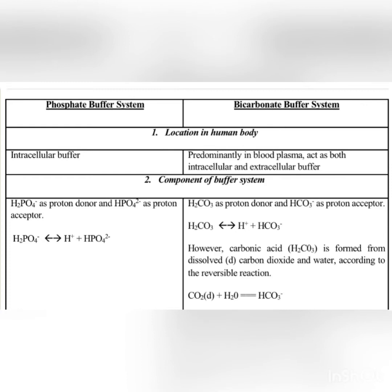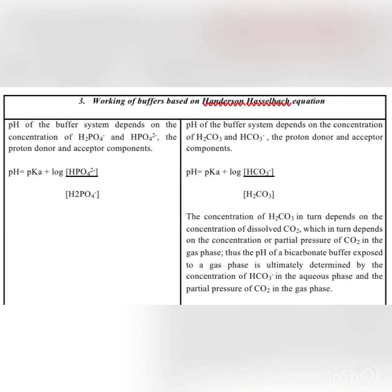The components of the phosphate buffer system are dihydrogen phosphate, which acts as a proton donor, and hydrogen phosphate, which acts as a proton acceptor. On the other hand, for the bicarbonate buffer system, carbonic acid acts as the proton donor and bicarbonate acts as the proton acceptor. Now point number three: the working of the buffer based on the Henderson-Hasselbalch equation.